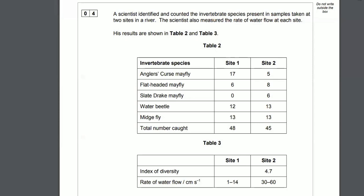A scientist identified and counted the invertebrate species present in samples taken at two sites in a river. The scientist also measured the rate of water flow at each site. His results are shown in Table 2 and 3. We've got the name of the invertebrate species here, and then we've got Site 1 and 2. This shows the number of each species at different places on the river. Total number caught, 48 and 45. Then we've got the index of diversity, which is 4.7 on Site 2, which is quite high. The rate of flow of water seems to be 30 to 60 at Site 2, so the flow is faster than 1 to 14 at Site 1.